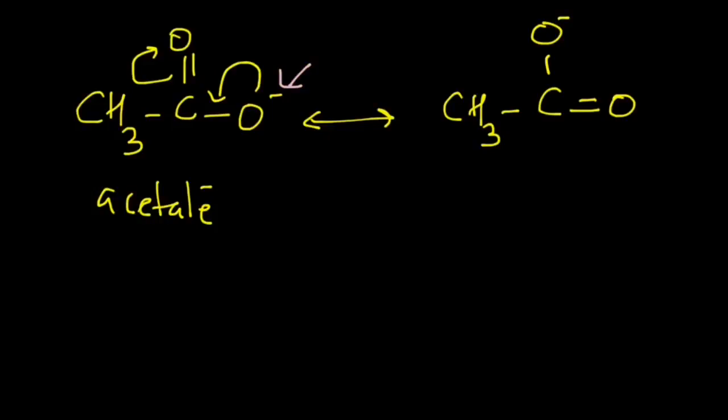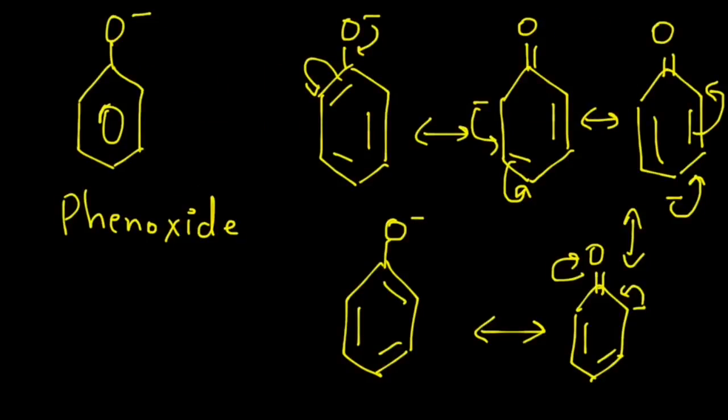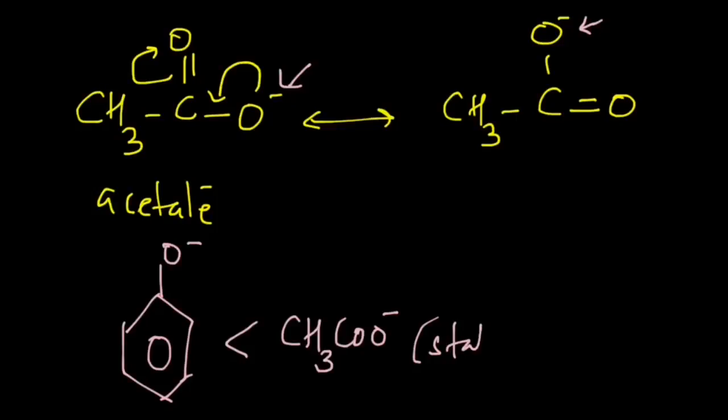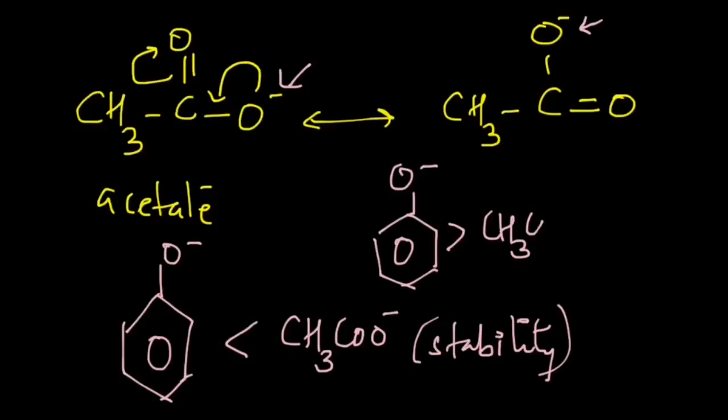It is going from an oxygen atom to another oxygen atom. Whereas if you look at the phenoxide ion, you will see that the negative charge is going from an oxygen atom to a carbon atom. And because of this reason, the acetate ion has a greater resonance compared to the phenoxide ion. And so, phenoxide ion is less stable than acetate ion. This also means that phenoxide ion is more basic than the acetate ion.